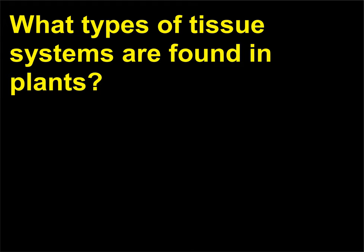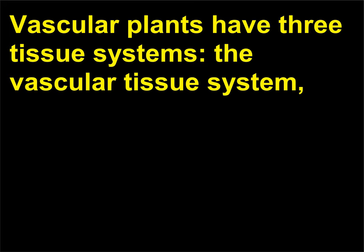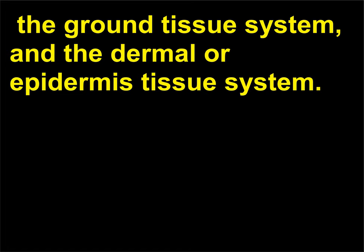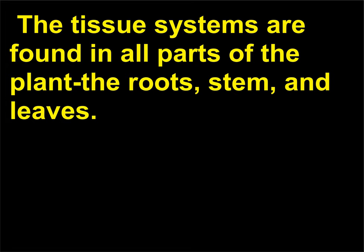What types of tissue systems are found in plants? Vascular plants have three tissue systems: the vascular tissue system, the ground tissue system, and the dermal or epidermis tissue system. The tissue systems are found in all parts of the plant—the roots, stem, and leaves.